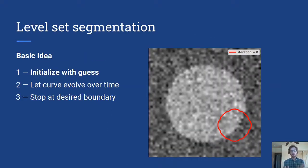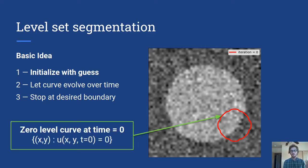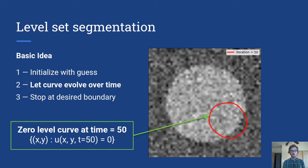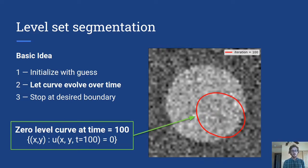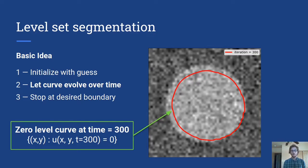Okay so let's talk about the basics of how this would work. So we'd start with some initialization. So this red curve is the zero level set of this function u at time equal to zero. In this case it's a kind of a bad guess but let's start with that. And then we'd let this curve evolve. So this is at time equal to 50, 100, 150, and hopefully this curve goes towards the desired boundary.